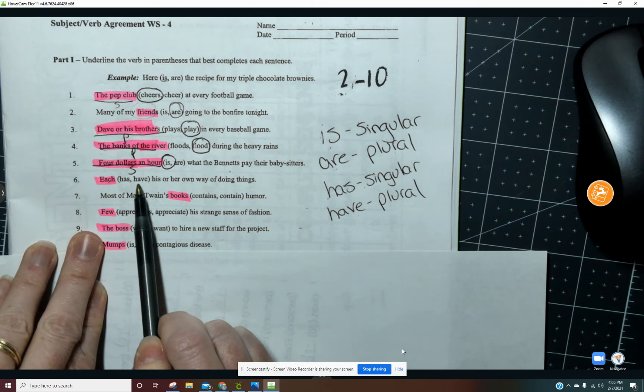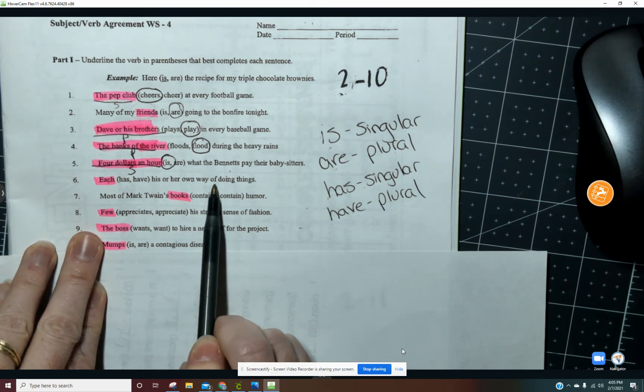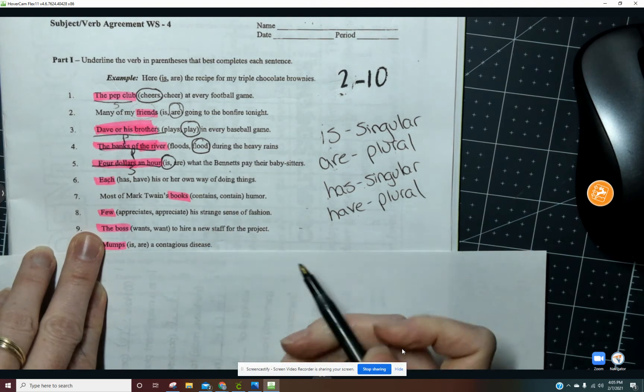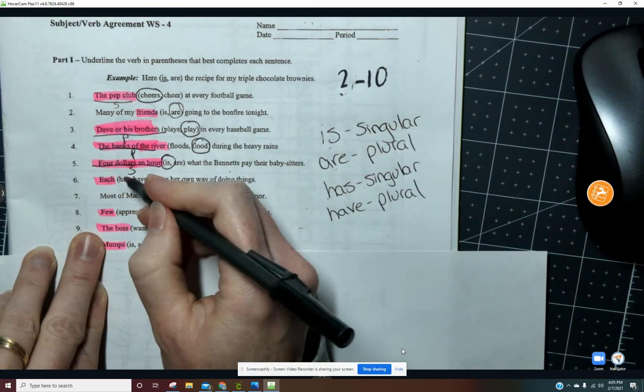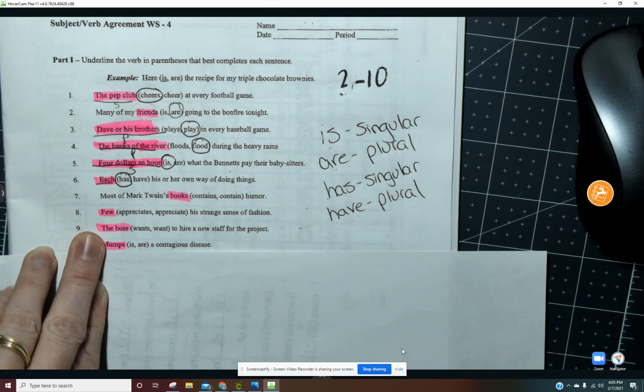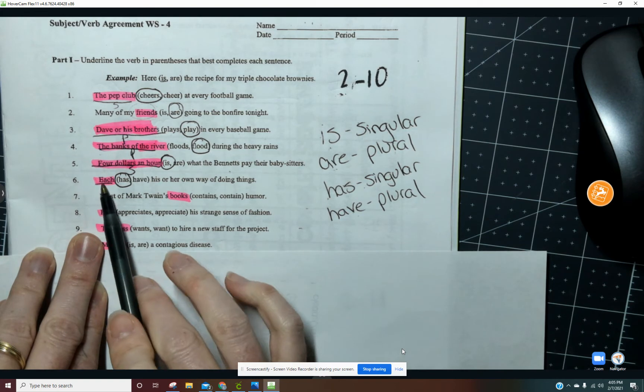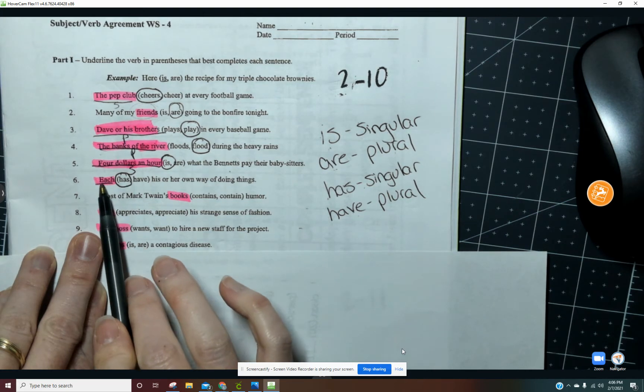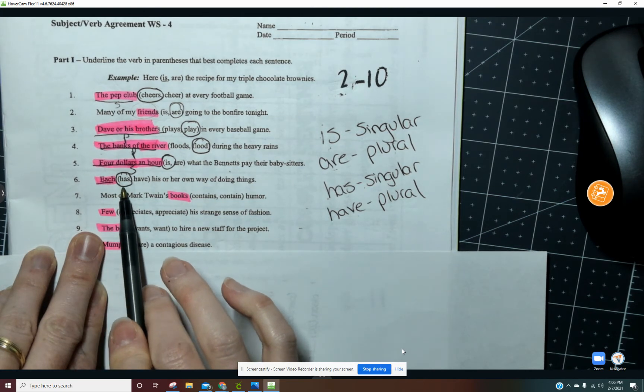Each has his or her own way of doing things. Each have his or her own way of doing things. Each has, each person, each brother, each dog. So the verb is singular. So, I'm sorry, the noun is singular so the verb needs to be has.